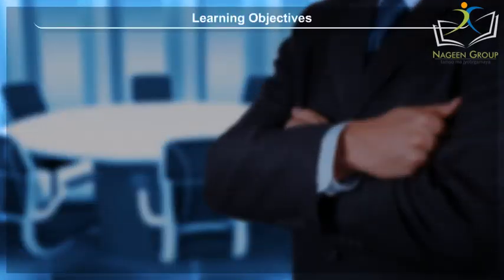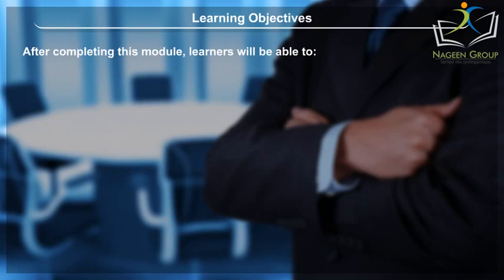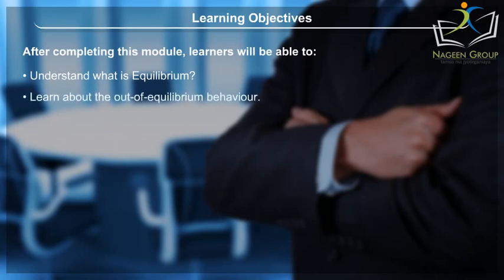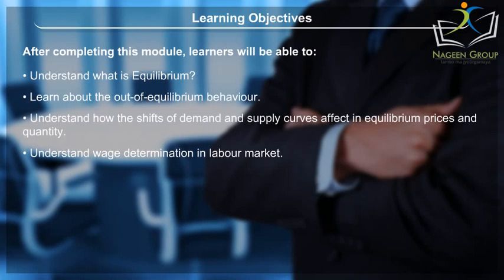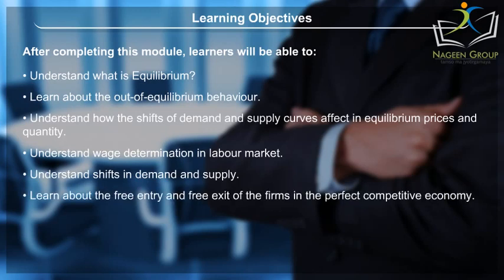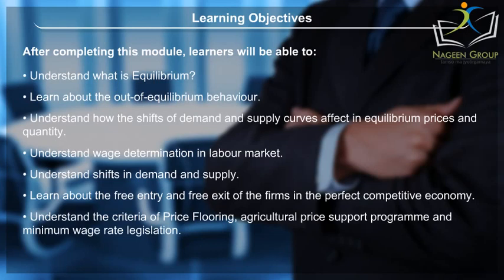Learning Objectives: After completing this module, learners will be able to understand what is equilibrium, learn about out-of-equilibrium behavior, understand how shifts of demand and supply curves affect equilibrium prices and quantity, understand wage determination in the labor market, understand shifts in demand and supply, learn about free entry and exit of firms in a perfectly competitive economy, and understand price flooring, agricultural price support programs, and minimum wage rate legislation.